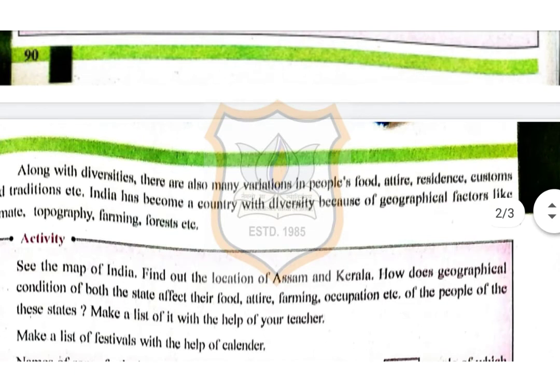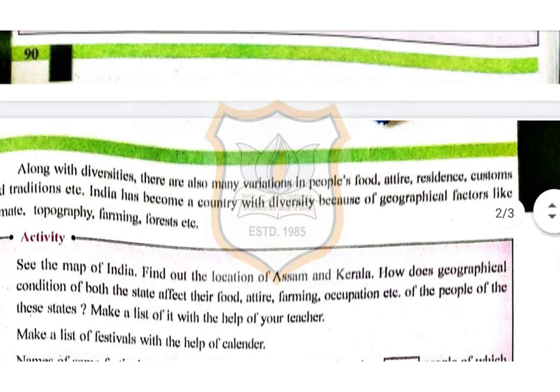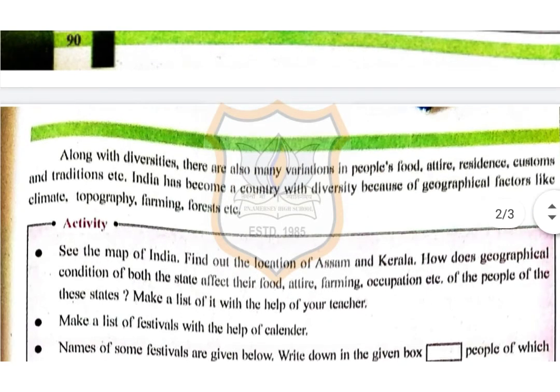Along with diversities, there are also many variations in people's food, attire, residence, customs and tradition etc. India has become a country with diversity because of geographical factors like climate, topography, farming, forest etc.